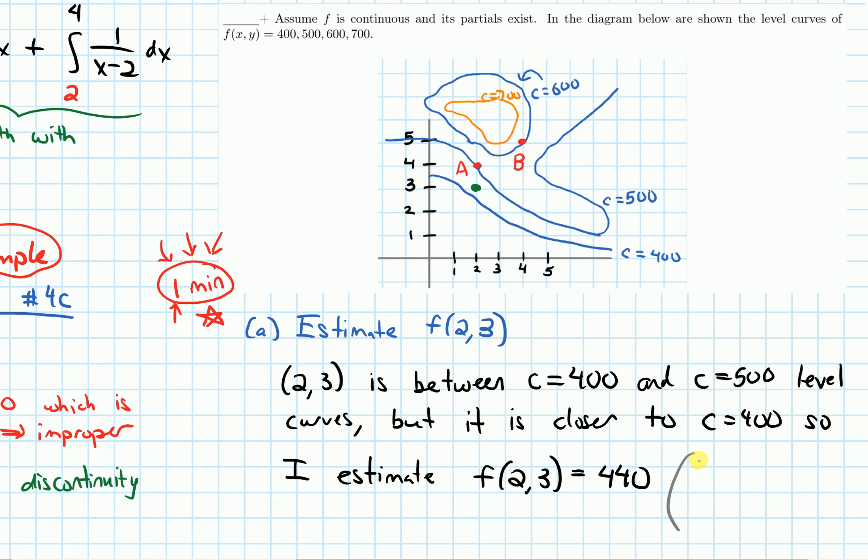In fact, I might say values between maybe 410 at the low end and 450 on the high end seem reasonable. So even if you got a slightly different value than me, even if you didn't get 440, that's okay. I think something between 410 and 450 seems pretty reasonable here.